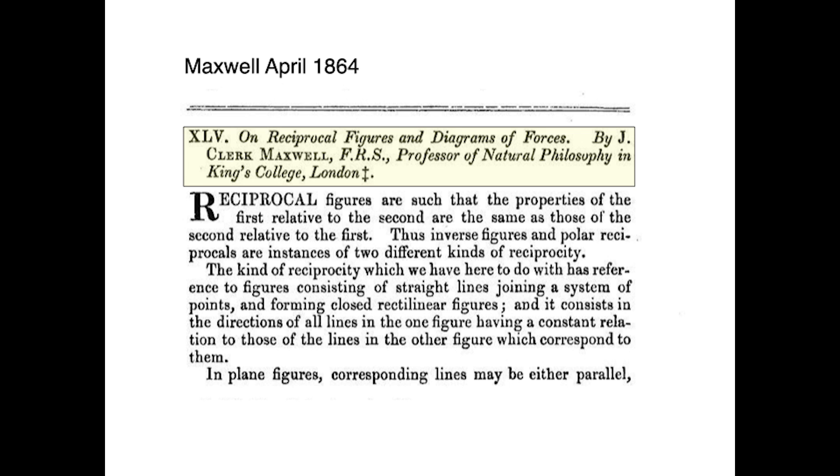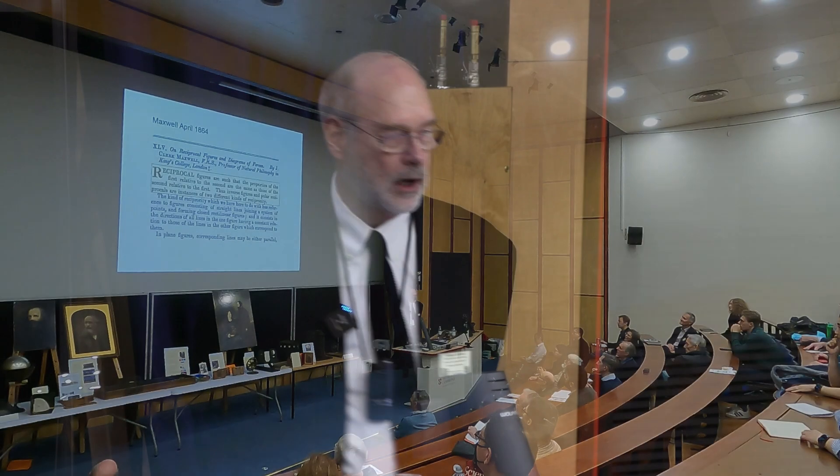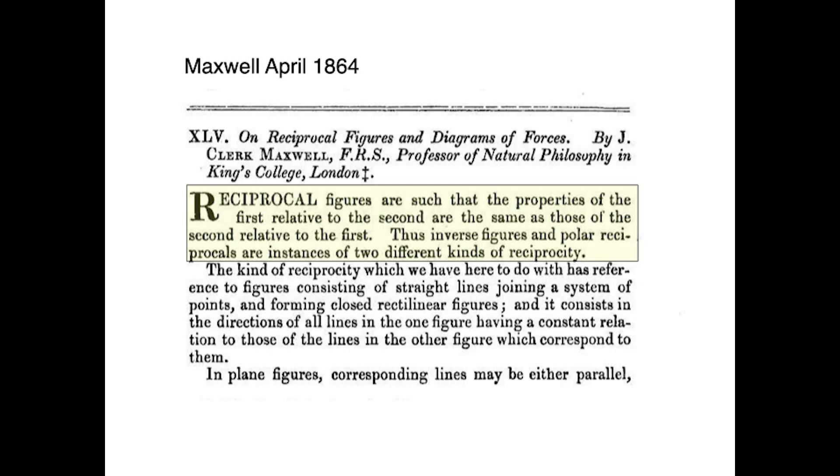One of the things he introduced is something called reciprocal figures and graphic statics. It started with a paper by this scary-looking guy, Rankine from Glasgow. Here it is. This is the entire paper. Three paragraphs, four sentences, published in the Royal Society. He submitted it in January 1864. It was published in February. It talked about the equilibrium of polyhedral frames.